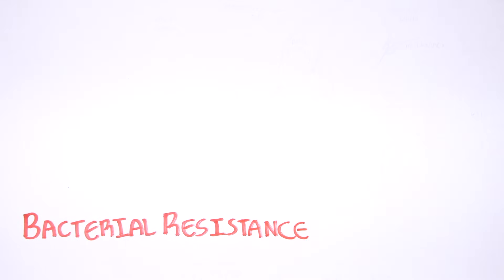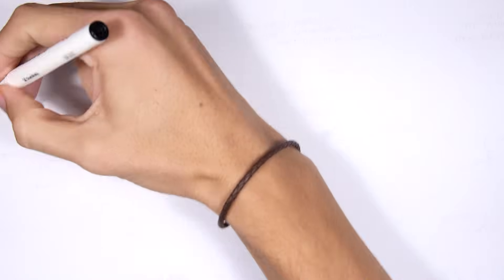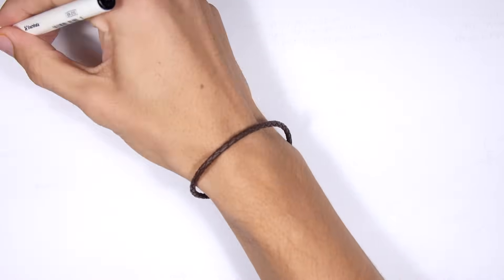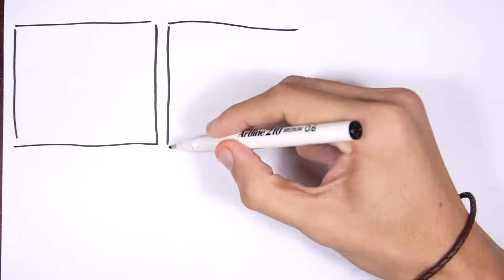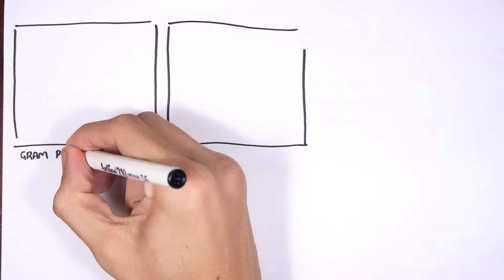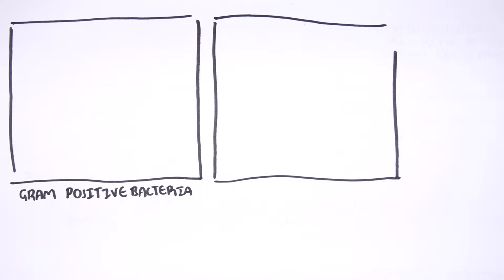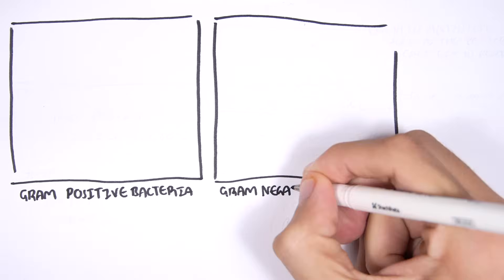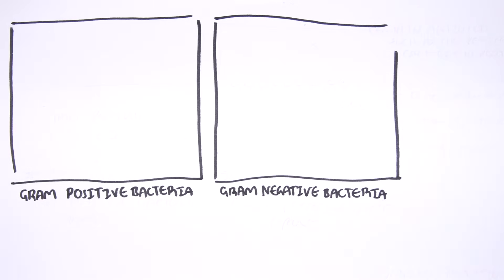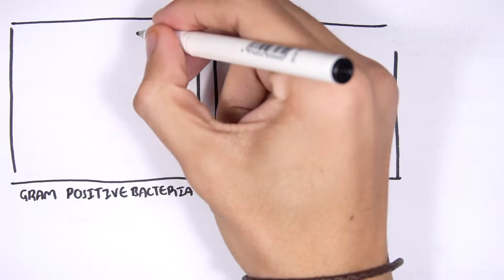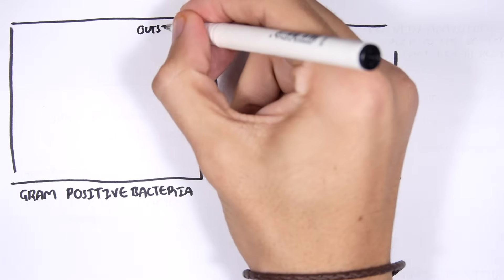Basically, how some bacteria are resistant to antibiotics and how they acquire such resistance. Let's start by looking at how bacteria can be grouped. We have two broad categories of bacteria: gram-positive and gram-negative. They differ in their cell wall membrane composition.